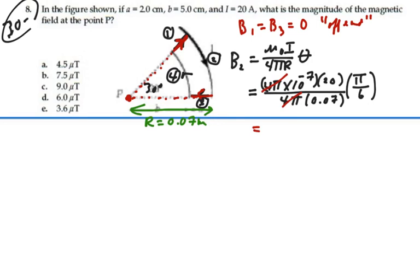And our θ of course is 30 degrees, but we have to have that in radians, so that's going to be π divided by 6 radians. Alright, so let's figure out what this is. Let's get rid of the 4π's.